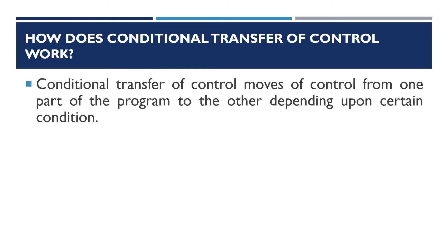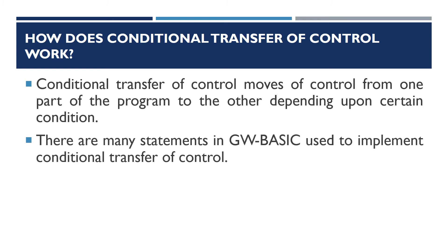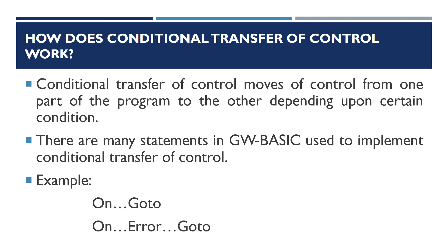Conditional transfer of control moves the control from one part of the program to another depending upon a certain condition. There are many statements in GW BASIC used to implement conditional transfer of control. Here we will learn only two: ON GOTO and ON ERROR GOTO.